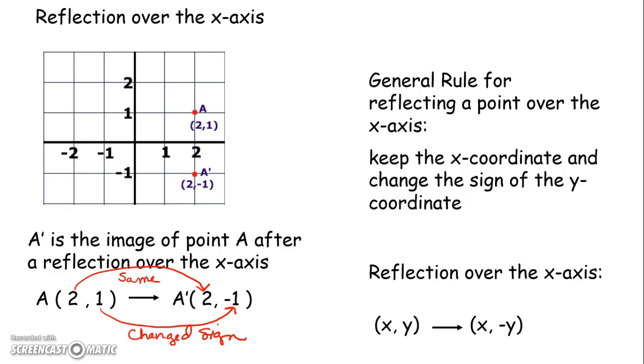Here it is in symbols reflecting over the x-axis. x, y becomes x comma and then you negate y. And what that symbol right there means is change the sign of y. So if y had been positive after you reflect over the x-axis, its sign will be negative. But if your y coordinate started as a negative after you reflect over the x-axis, it will actually become a positive. And we're going to go ahead and take a look at an example to solidify that for you.